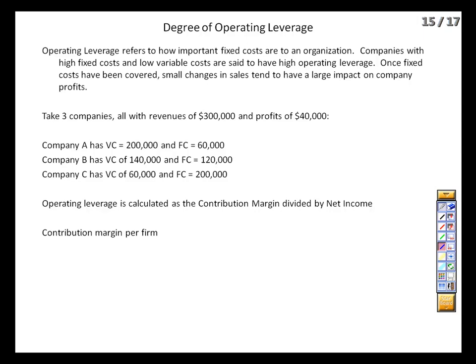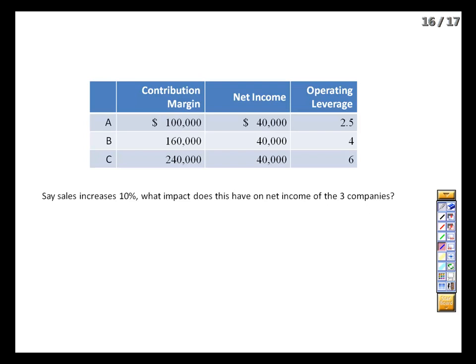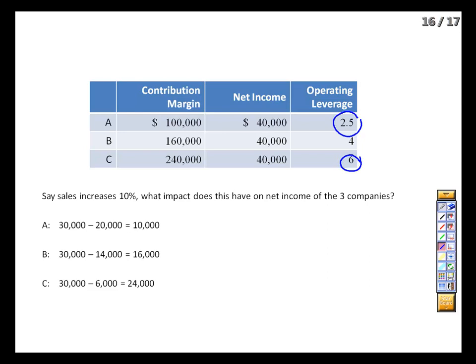Looking at contribution margin per firm: $300 minus $200 equals $100 of contribution margin for Firm 1, $160 for Firm 2, and $240 for Firm 3. When we divide those numbers by net income, the firm with relatively more fixed costs has a higher degree of operating leverage than the firm with relatively less fixed costs. What does this translate into? Different profits associated with changes in volume. If sales increase by 10%: for Company 1, revenue goes up by 30, variable cost up by 20, yielding $10,000 of incremental contribution margin. For Firm 2, it's 30 minus 14 equals 16, and for Company 3 it's 30 minus 6 equals 24. Company 3 makes significantly more profit from future sales, even though all three increased raw sales by the same amount.